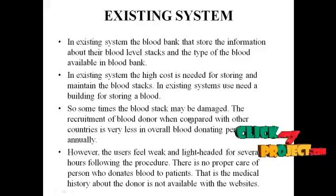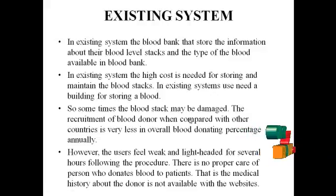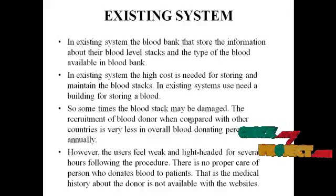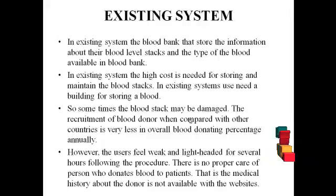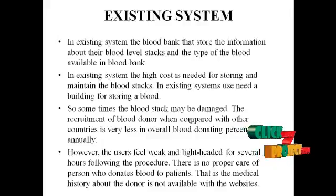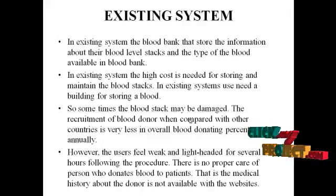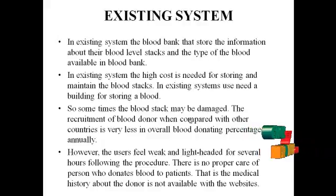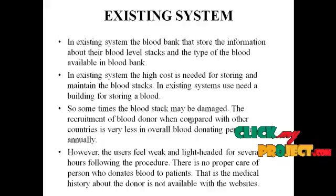Existing system: In the existing system, the blood bank stores information about their blood level stocks and the type of blood available. The existing system requires high cost for storing and maintaining the blood stocks. A dedicated blood storage building is needed, and sometimes the blood stock may be damaged.